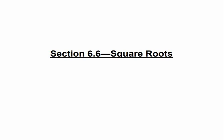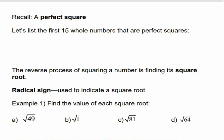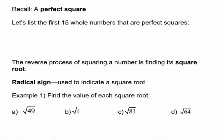This is section 6.6, Square Roots. Do you remember what a perfect square is? And I'm not talking about the shape. For a number to be a perfect square, it's a number that we can get by multiplying another number times itself. For example, 4 is a perfect square because we can get it by multiplying 2 times 2.